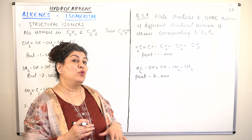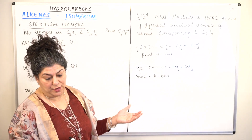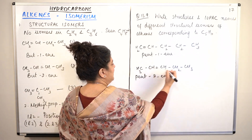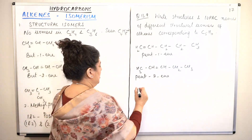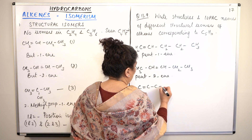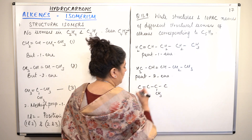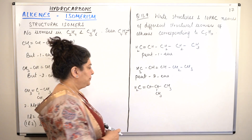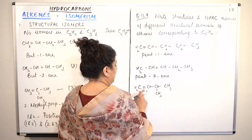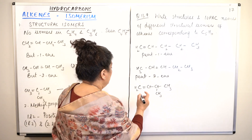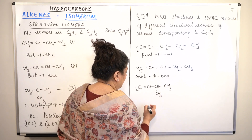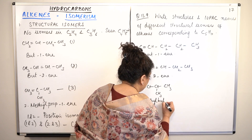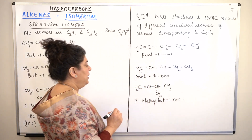Next, we go for branched isomers of pentene. Taking one methyl group off makes the main chain four carbons. Placing the double bond between carbons 1 and 2 with a methyl branch gives us CH2=CH-CH(CH3)-CH3. Counting from the direction that gives the ene the lower locant, this is 3-methyl-but-1-ene.